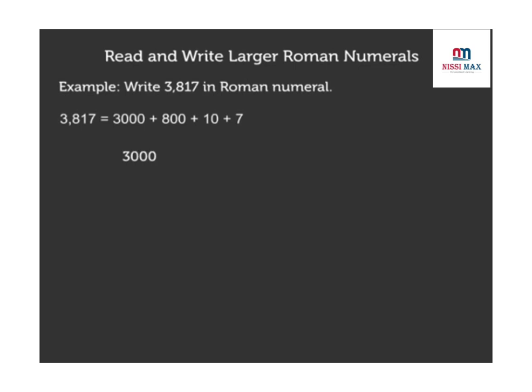Now write the Roman numeral values of each. That is 3000 as MMM, 800 as DCCC, 10 as X, and 7 as VII, which is equal to MMMDCCCXVII.